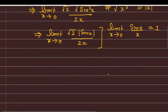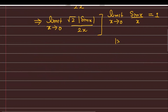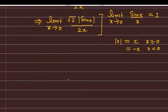Mod हटाने के लिए property यह है: अगर आप किसी भी number का mod लेते हैं — मानके चलिए mod of x — तो यह x के बराबर होता है अगर x ≥ 0, और mod of x = −x if x < 0. तो मुझे check करना पड़ेगा कि यह sin x positive है या negative। अगर positive है तो mod सीधा हटा सकते हैं, और अगर negative है तो बाहर एक minus apply करना पड़ेगा।